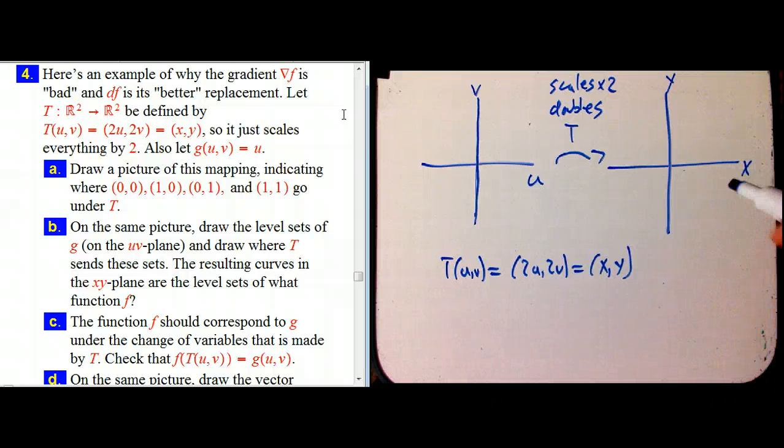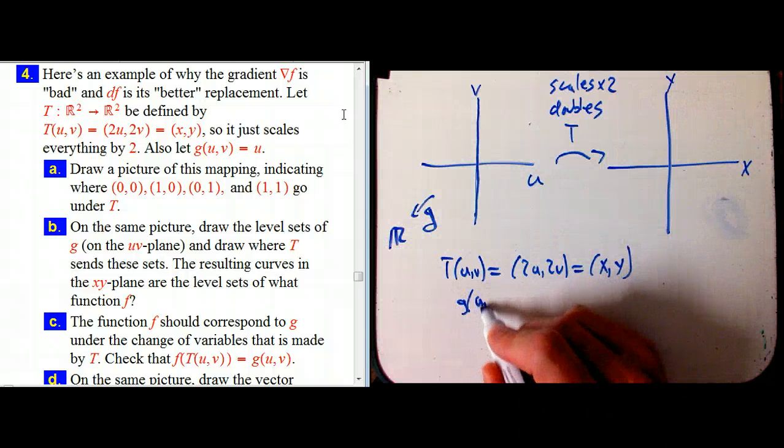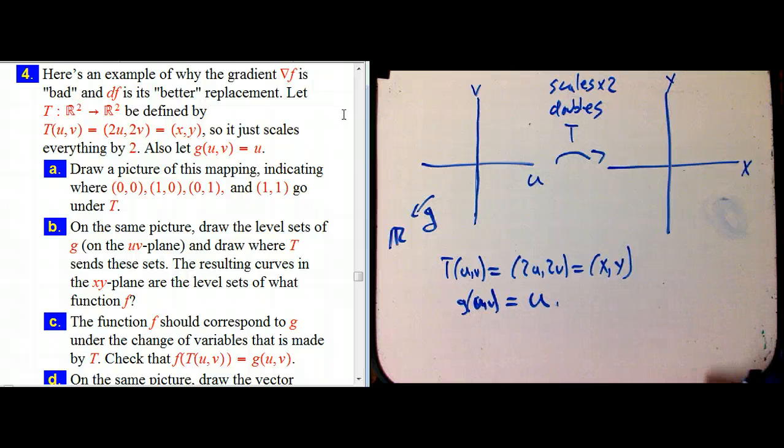Excuse me. And then I'm going to have a function here, g. Oh sorry, the function is going to be here actually. And it's just going to be g of uv is just u. Just the first coordinate function.